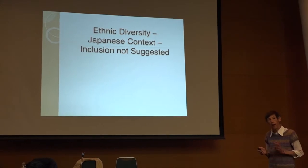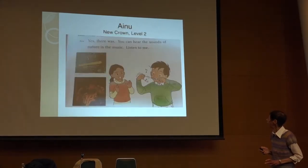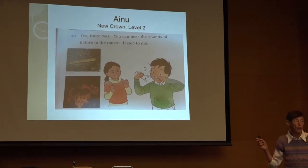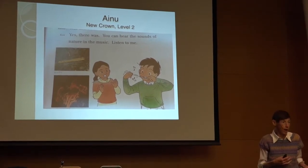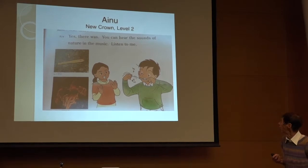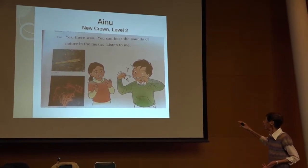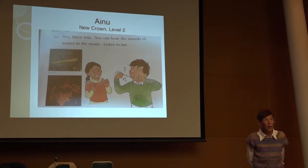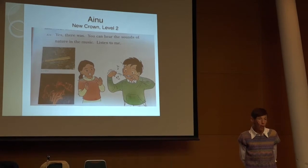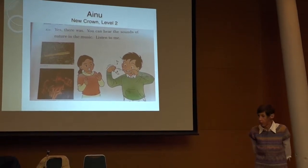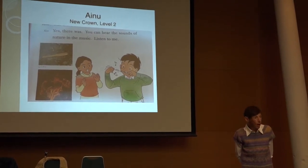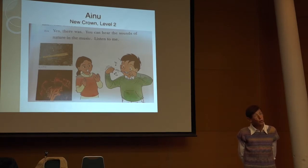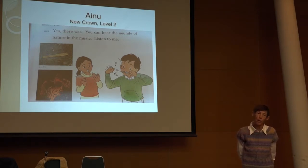As for ethnic diversity within Japan, I found only two examples. One was the Ainu — young people going to an Ainu festival in Hokkaido, with typical Ainu dishes and the Ainu instrument. The Ainu were represented, but at a somewhat superficial level. I see this in the United States too — Mexican Americans are represented through piñatas, food, and costumes, but that's about as far as it goes. It's a safe topic to talk about customs and instruments.